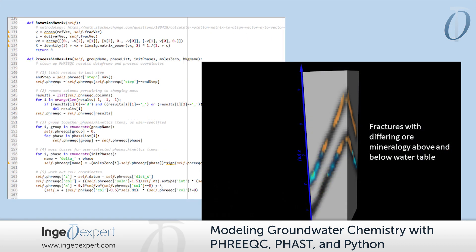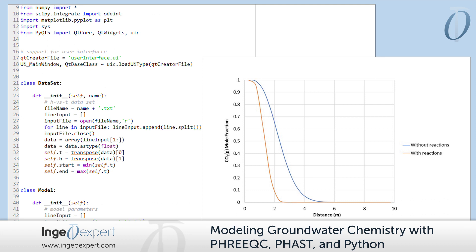Finally, we will work through some examples of how to use Python to assist in enhanced geochemical and reactive transport modeling. Applications will include pre- and post-processing of models, and setting up specialized, more advanced simulations with help from the Python Scientific Stack.